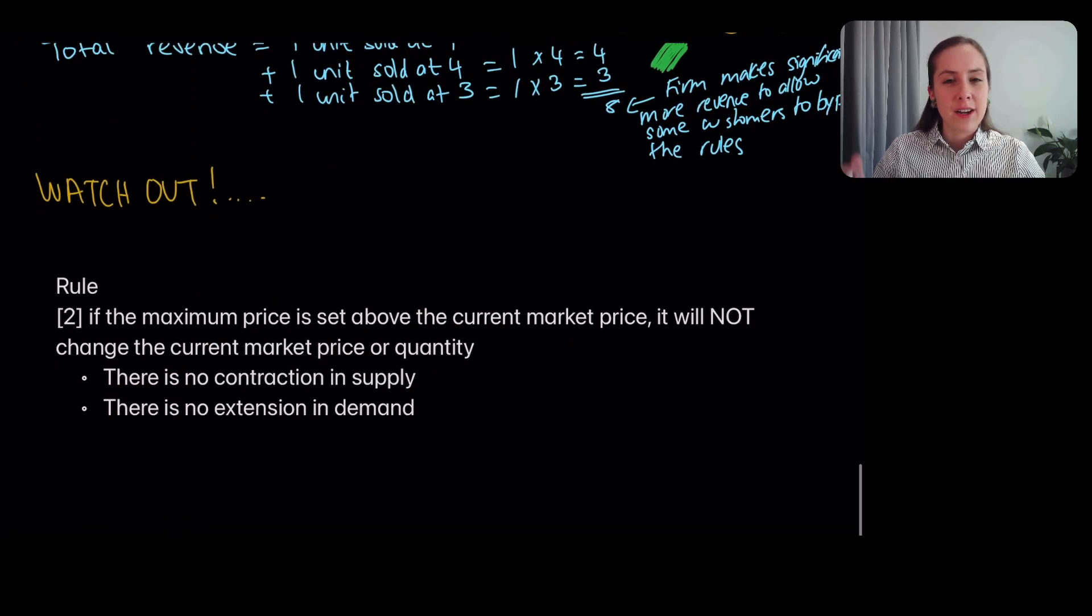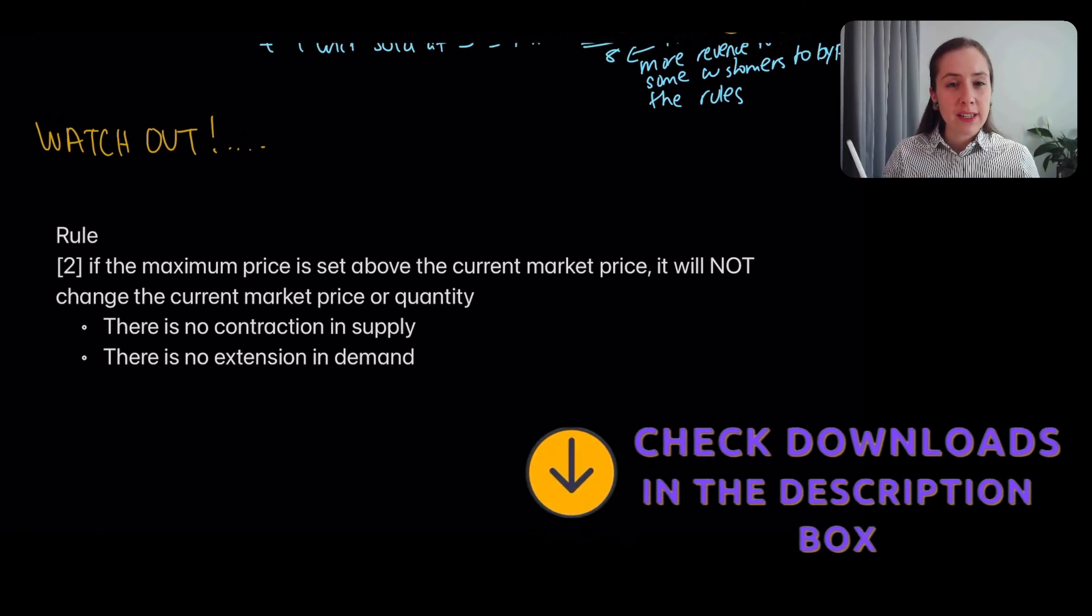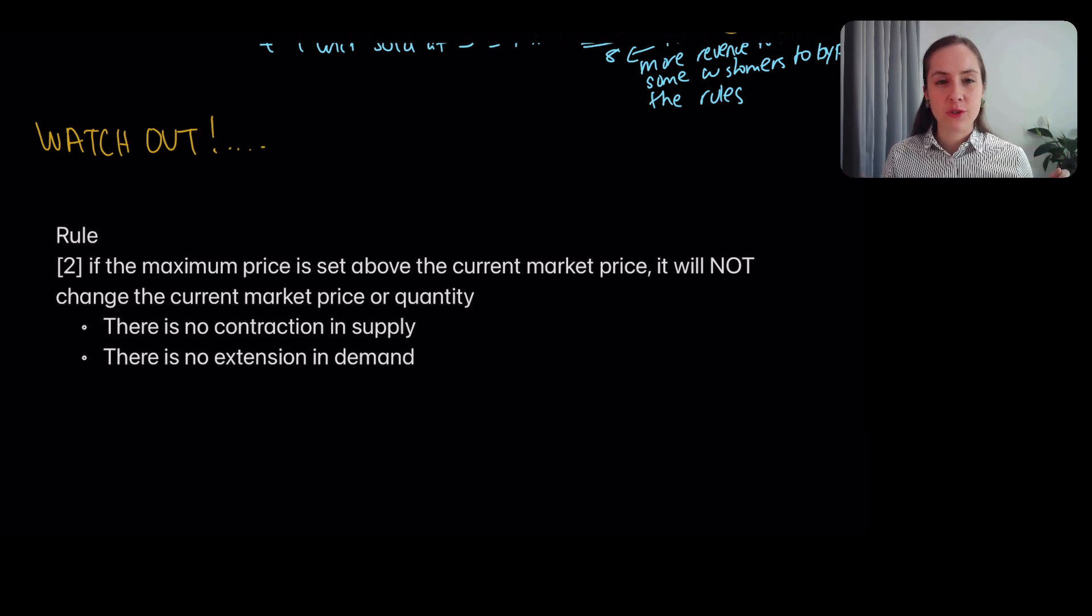So you've got the notes at the bottom. And before we leave, remember rule two, remember this really well, because this is a common trick that these multiple choice questions can play, which is if a maximum price is set above the current equilibrium, it's not going to change anything. So that is a trick.